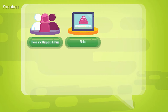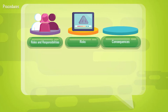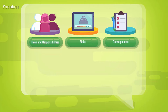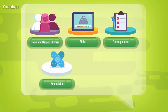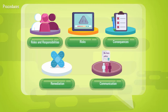Identify risks and how to mitigate them. Establish consequences for non-compliance. Determine a procedure to solve any issues discovered. Define how to communicate the policy internally, to suppliers, and to your recruitment agents.